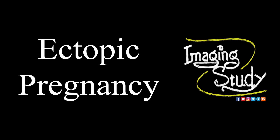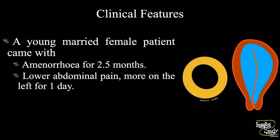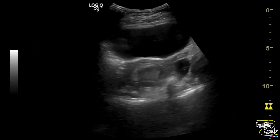Hi everyone, welcome to Imaging Study. Today we are going to see a case of ectopic pregnancy. A young married female patient came with amenorrhea for more than two and a half months. She had also given the history of lower abdominal pain, more on the left side, for one day. Let's see what we have got on ultrasound.